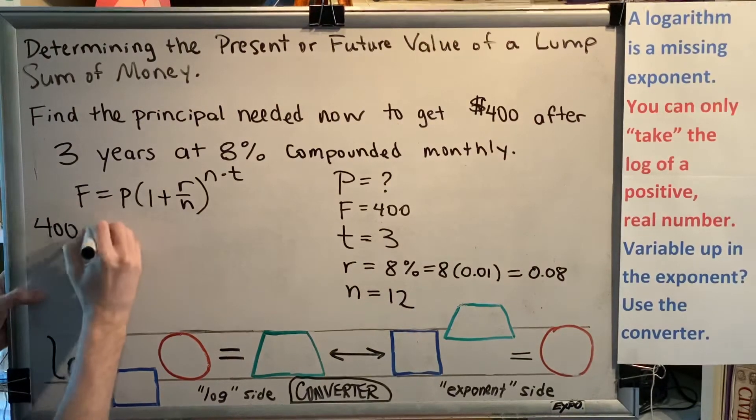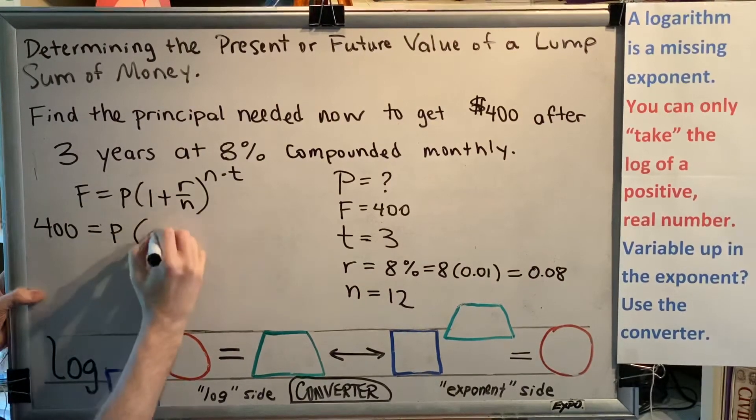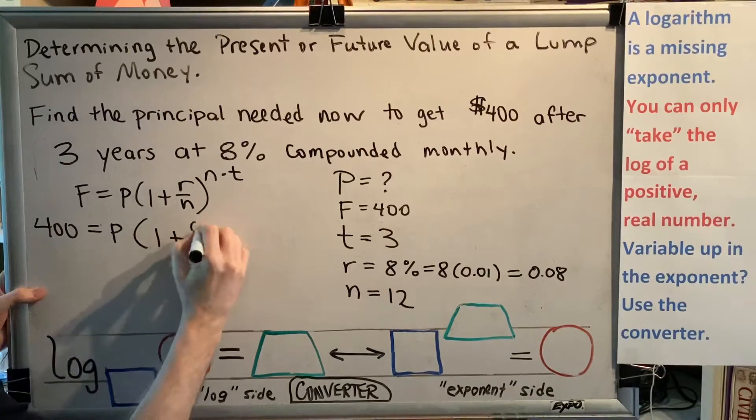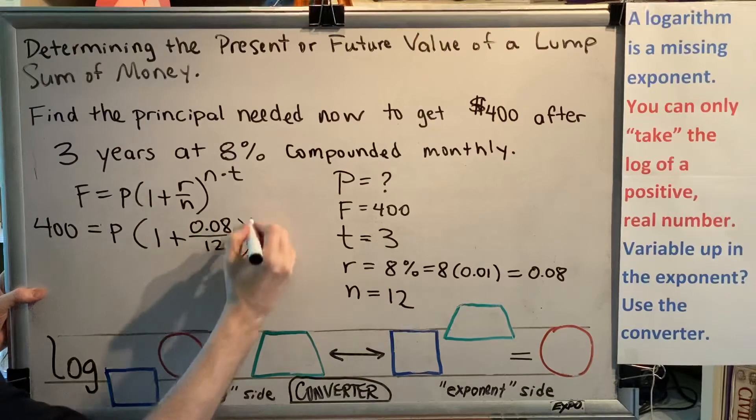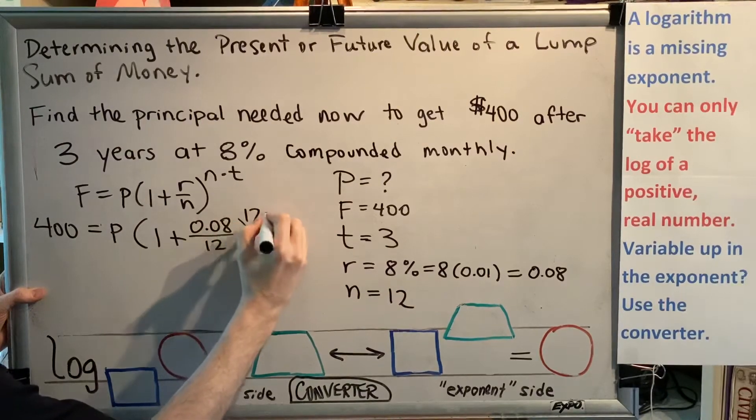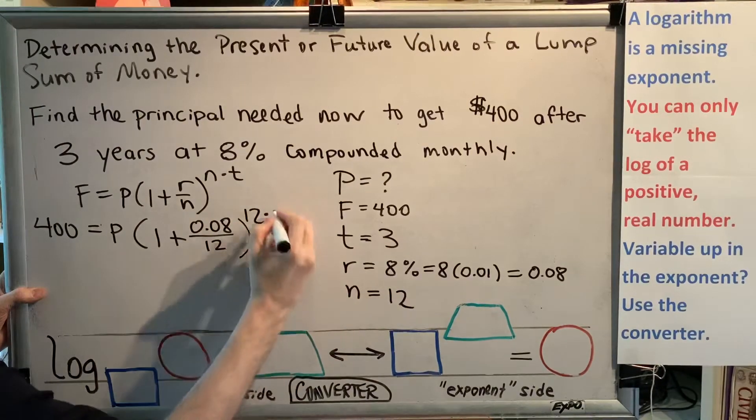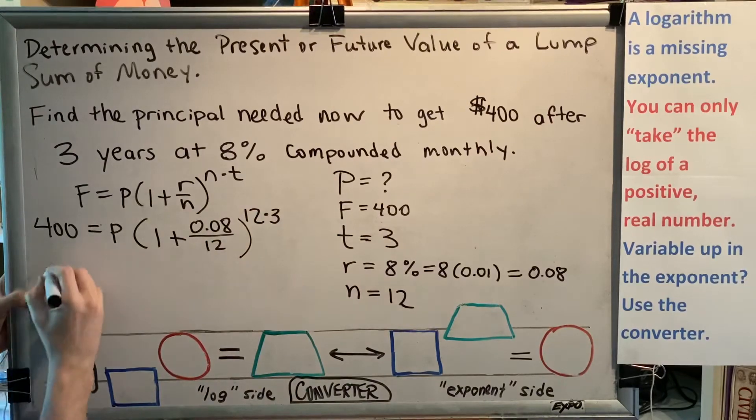F, 400. P, our variable that we want to solve for. r, 0.08. n, 12. And then n times t would be 12 times 3. Let's do some math here.